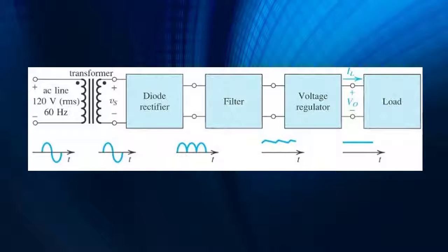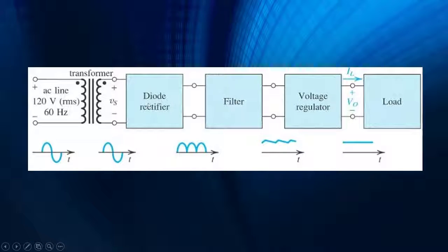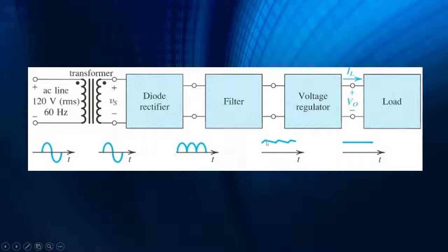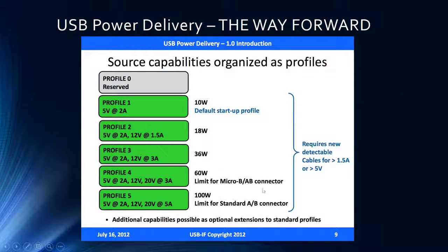A typical power supply takes 120V RMS at 60 Hz, steps it down through a transformer — still as AC, which is unusable by electronics — then passes through full-wave diode rectification, a filtering stage, and a voltage regulator to the load. Our primary area of concern is the voltage regulator, where efficiency and total deliverable power are determined — transitioning from jagged DC to clean, stable DC to meet targets like 5V at 20A or 20V at 5A.